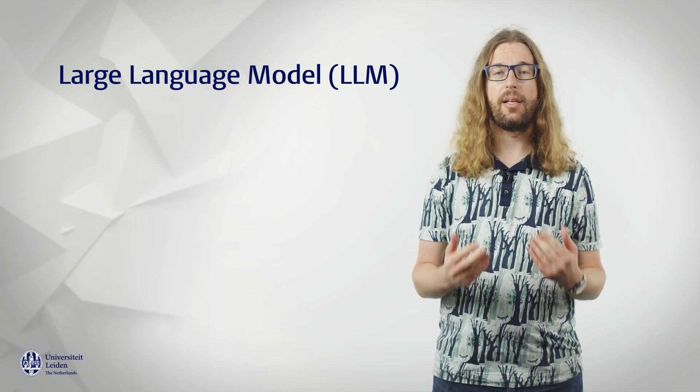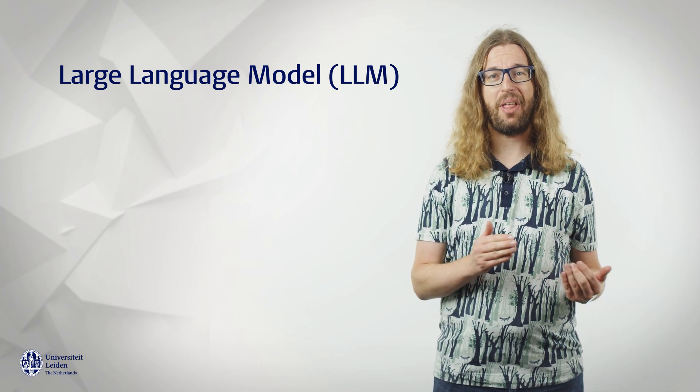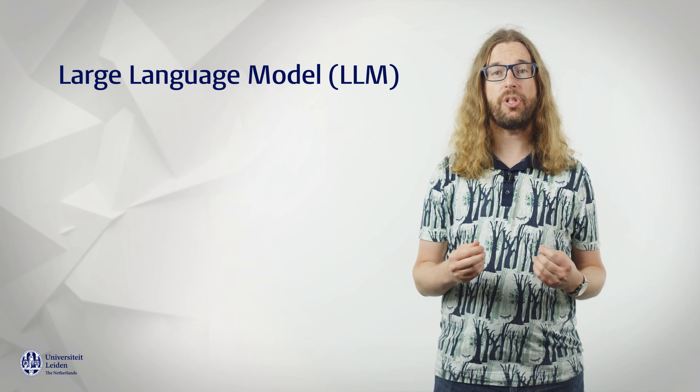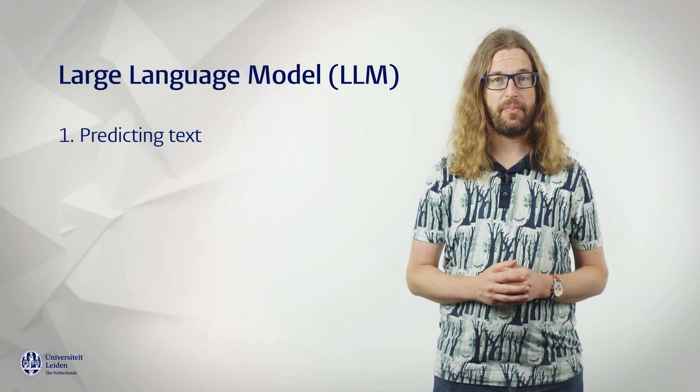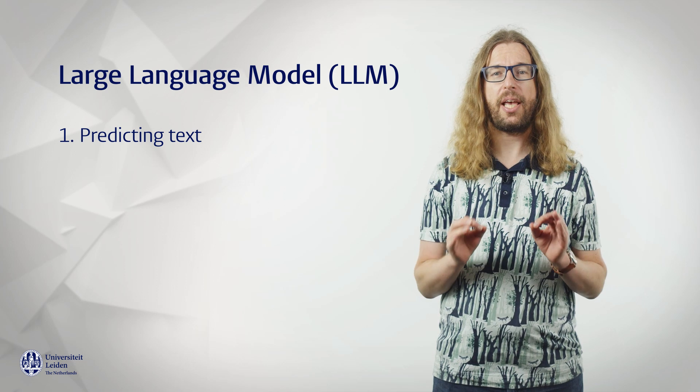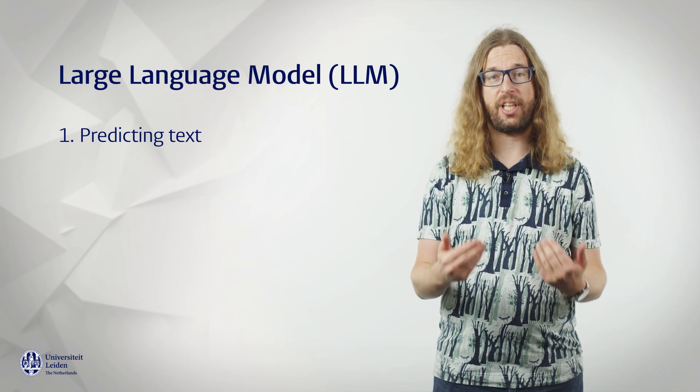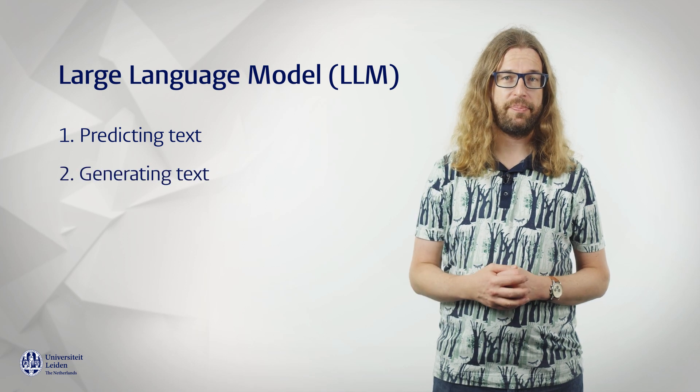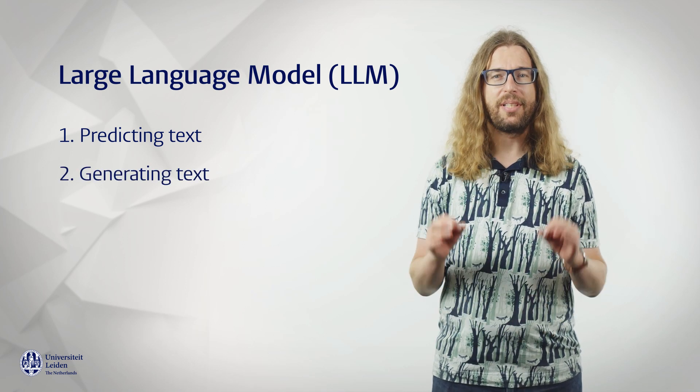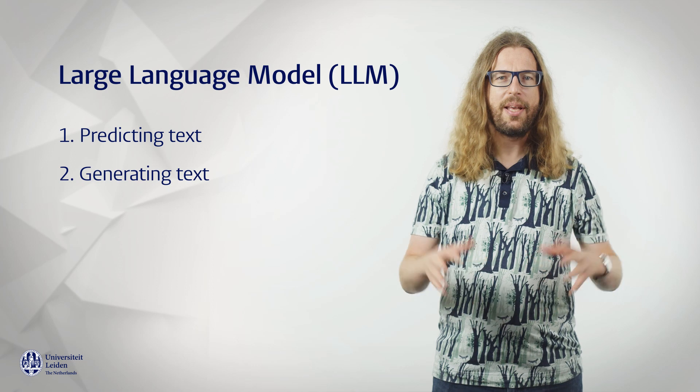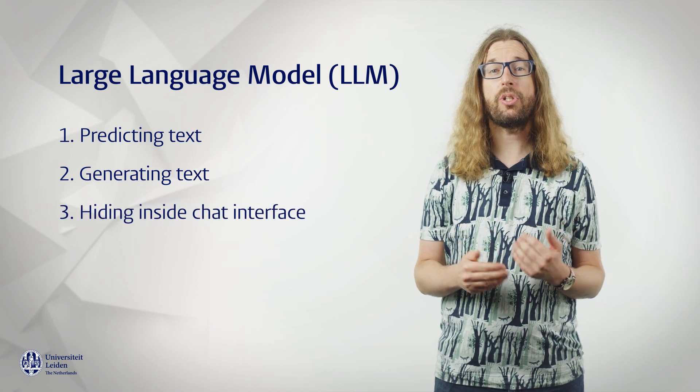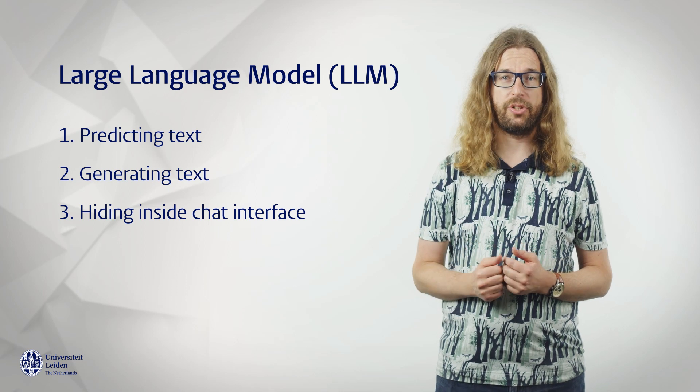In the first step, a large language model or LLM is trained on a data set to become good at predicting text. In the second step, this LLM which predicts text is turned into a program that generates text. And in the third step, this text generating program is hidden inside a chat interface where the user can ask questions and get answers.